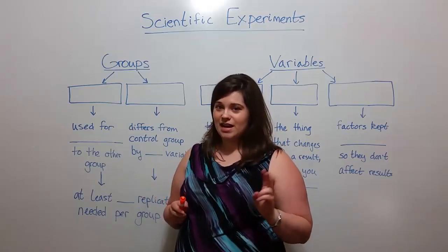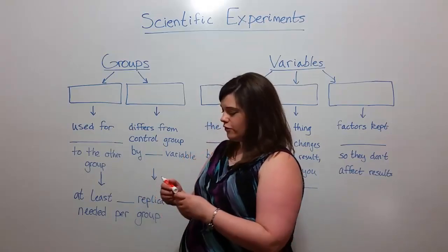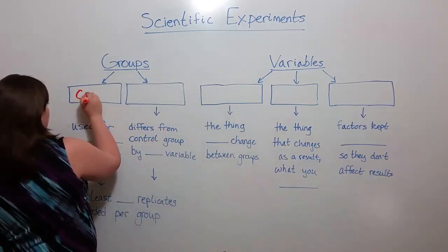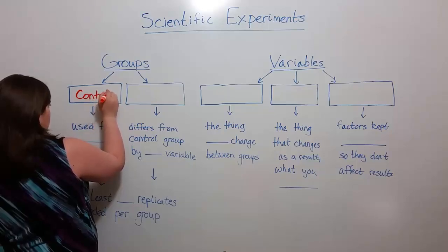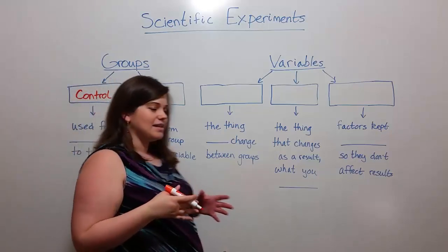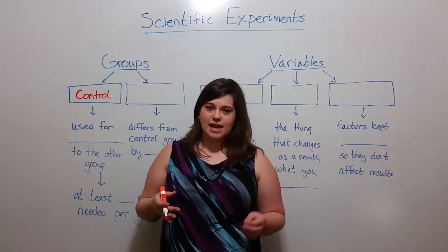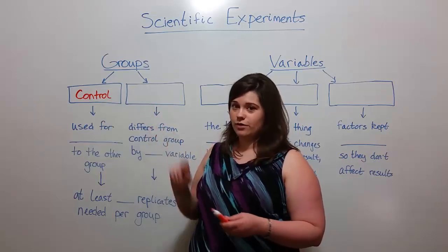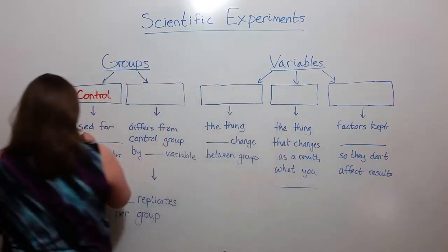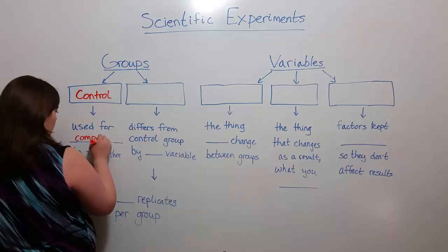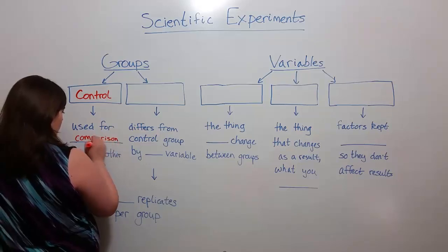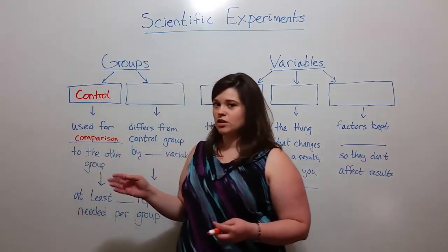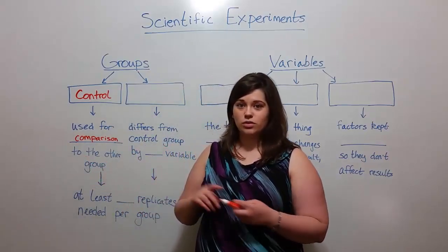There are two different groups in any good experiment. The first one, called the control group, is mainly used for the sake of comparison — that is, comparing the two different groups. The other group in any good scientific experiment is called the experimental group.